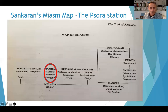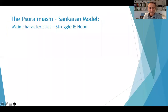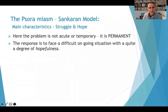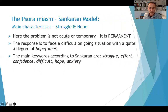Now we move on to the Psoric miasm as one of our primary miasms. The idea of struggle comes up — struggle and hope. The problem here is more permanent as opposed to the acute miasm, but it can be faced with a fair degree of hopefulness. Main keywords: struggle, effort, some difficulties, hope, and anxiety. As opposed to the acute miasm where it's an overwhelming automatic reaction, this is a more considered response to difficult and challenging circumstances, feeling that one needs to struggle, but with a possibility of coming through the other side.